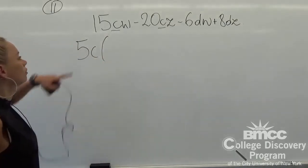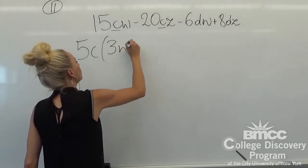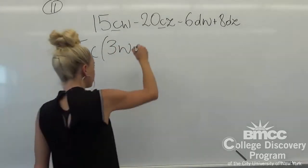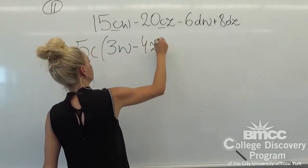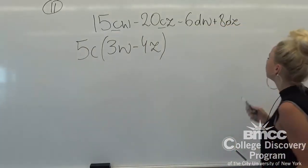From our first term we're going to have left 3w, and from our second term we're going to have left 4z. Let's have a look at our two remaining terms.